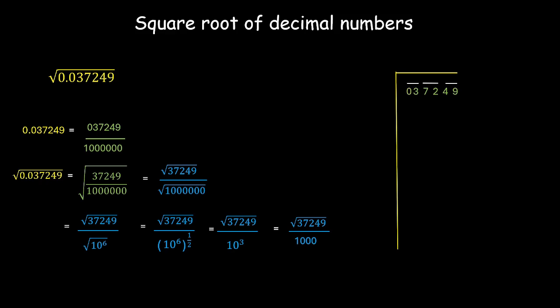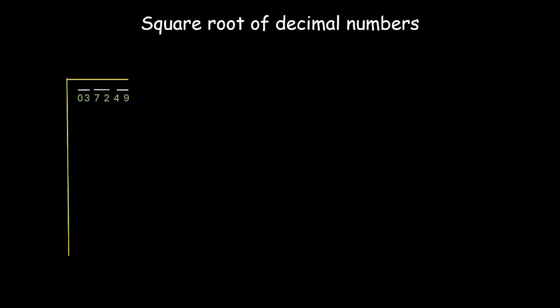Now the first step after making the pairs is to look at the first pair and find a perfect square which is equal to this or less than this. Square of 1 is 1 and square of 2 is 4. Now since 3 is less than 4 so we'll take 1 over here. Now we'll write it as 1 into 1 is equal to 1. Then we will subtract this. So we'll subtract 1 from 3 and we get 2.